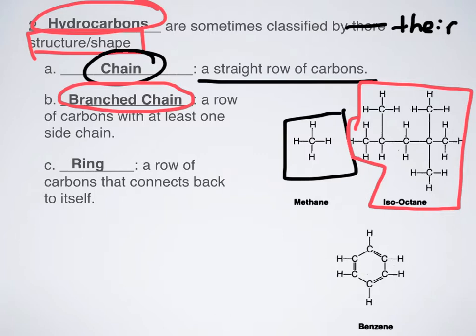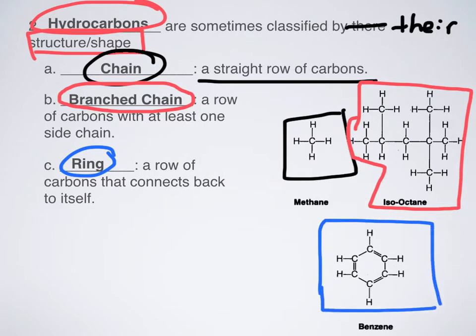Next up, rings. Rings — that's just a row of carbons that connect back to itself. Right here is a really good example: it's benzene, a good example of a ring structure.